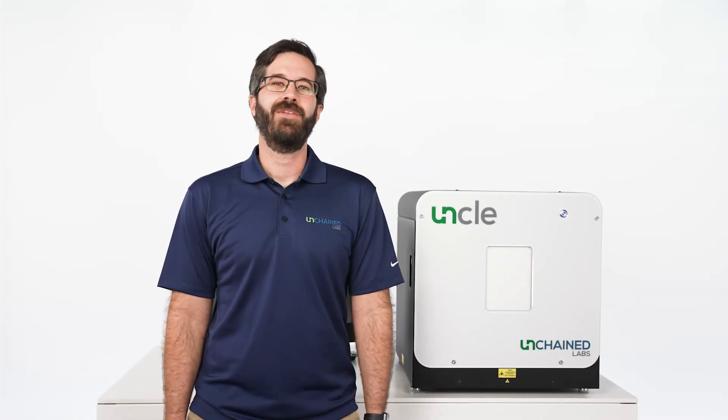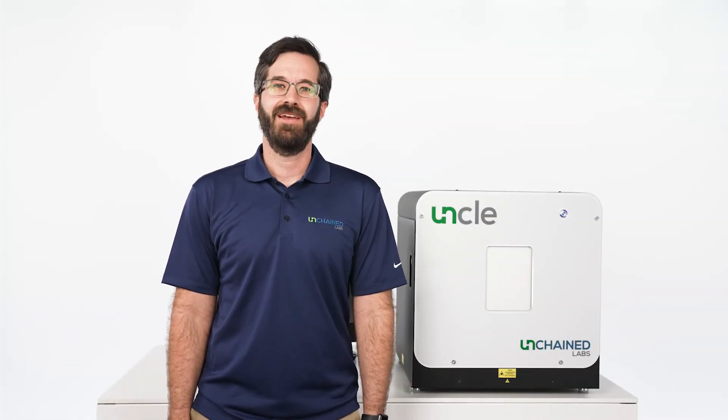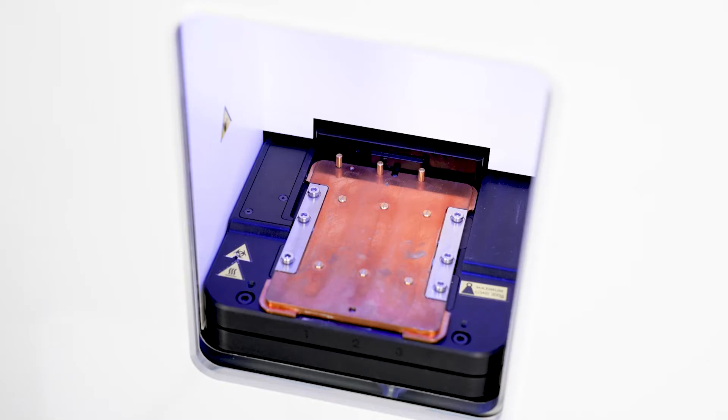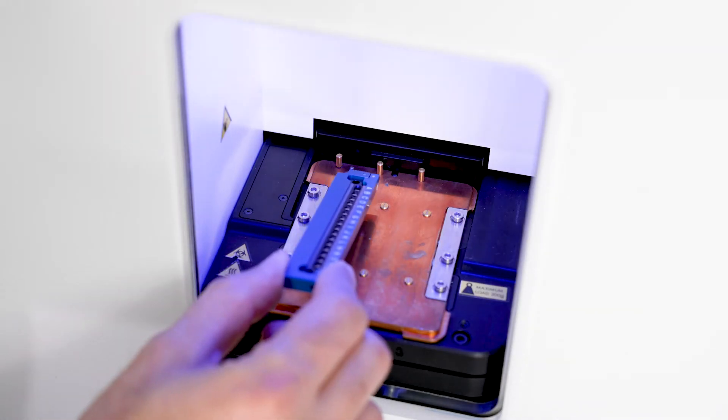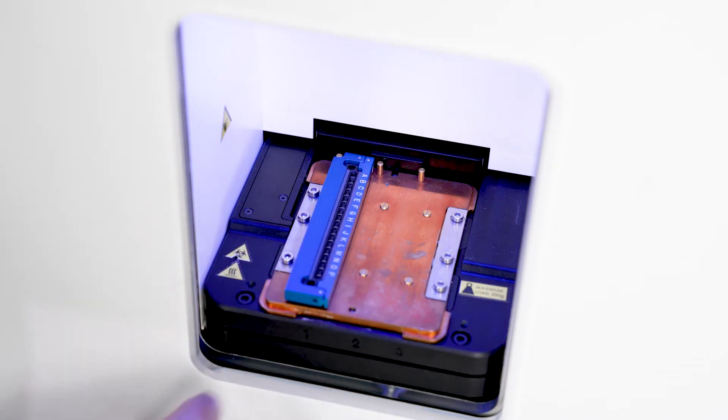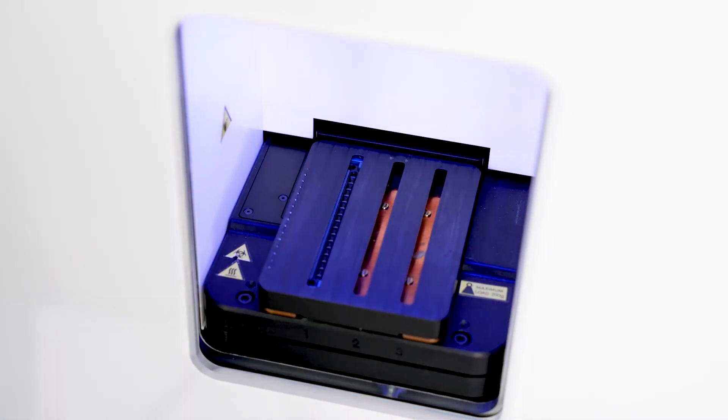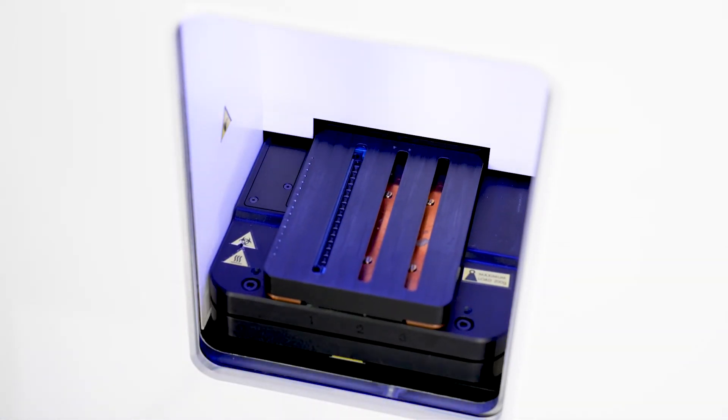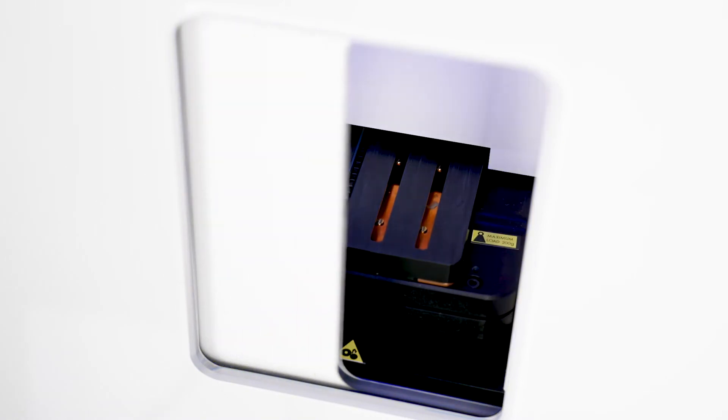UNCLE uses a Peltier thermoelectric surface to heat up samples. That's our copper colored plate here. Unis magnetically snap into the UNCLE. With space for up to three unis at a time, UNCLE can run from one to 48 samples in an experiment.